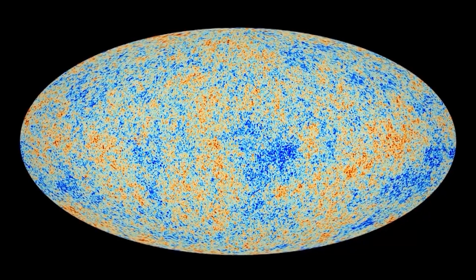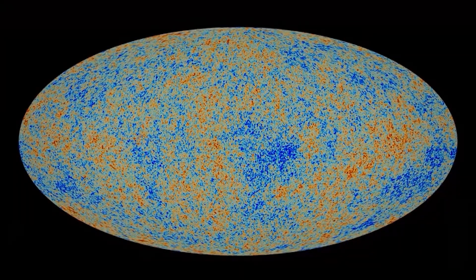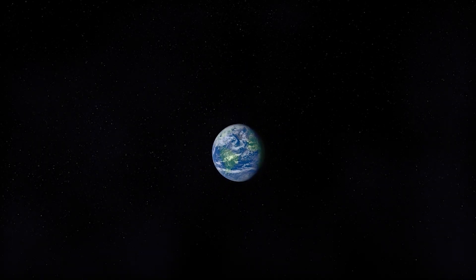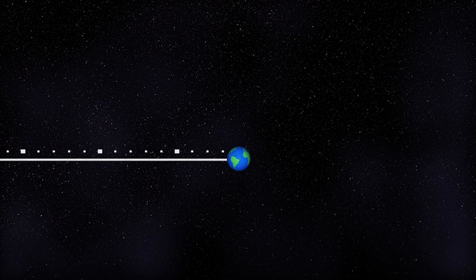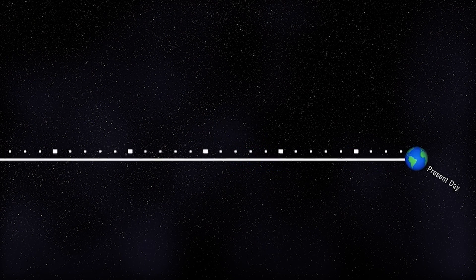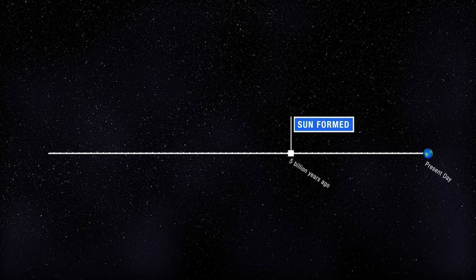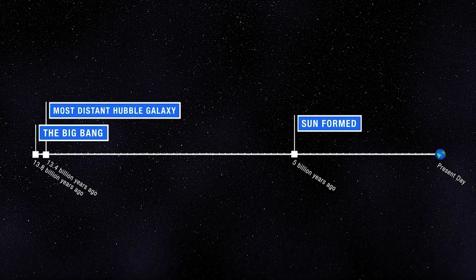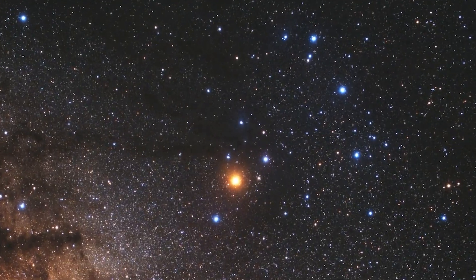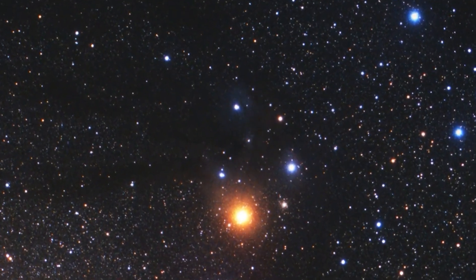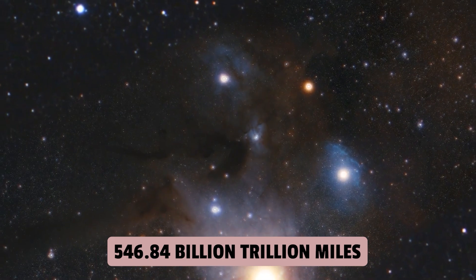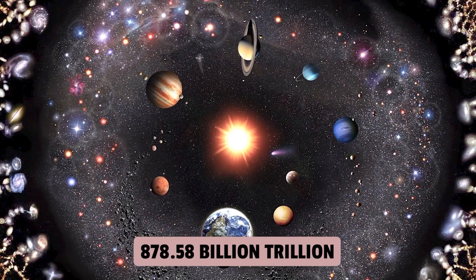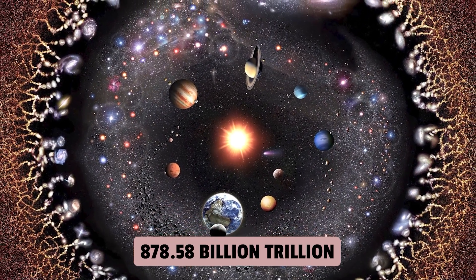But what does this number really mean? To put it in perspective, a light year is a unit of distance used in astronomy and is equal to approximately 5.88 trillion miles or 9.46 trillion kilometers. This means that the observable universe is approximately 546.84 trillion trillion miles or 878.58 trillion trillion kilometers across.